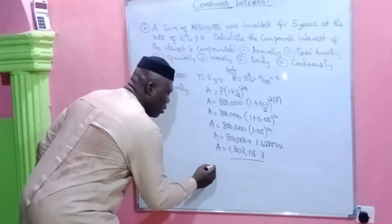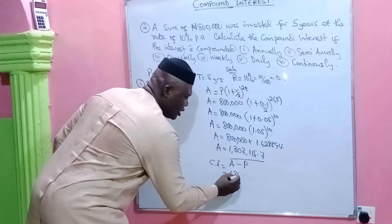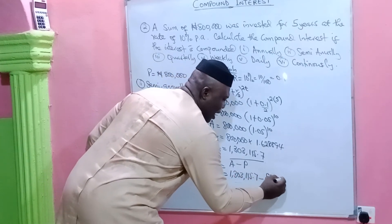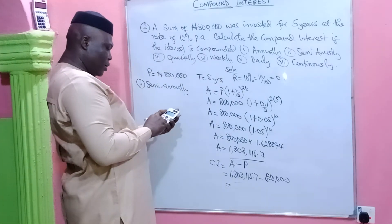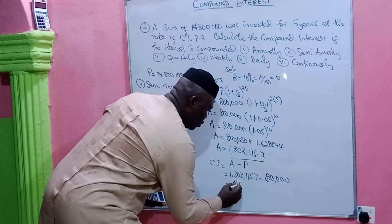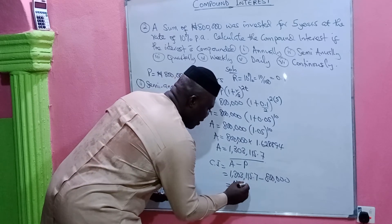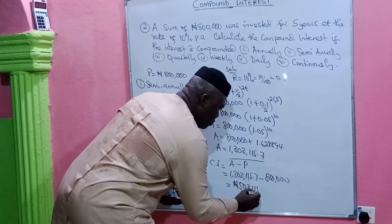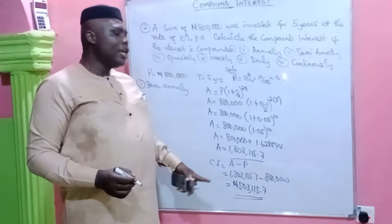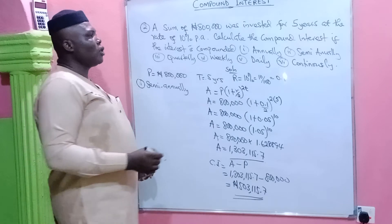Compound interest is always amount minus principal. So 1,303,115.70 minus 800,000 gives a compound interest of 503,115.70. If you observe this answer, you see it is a little bit higher than the one we calculated for annually. So semi-annually would definitely be a little higher.